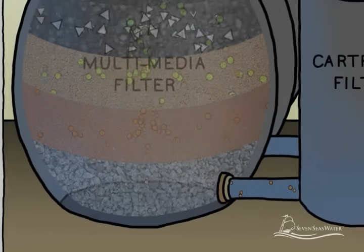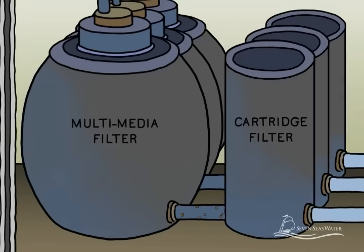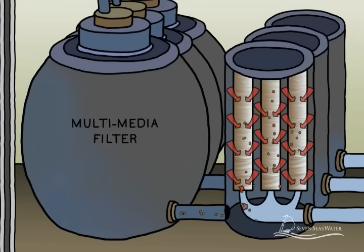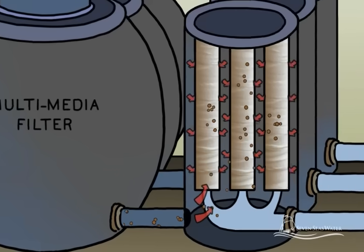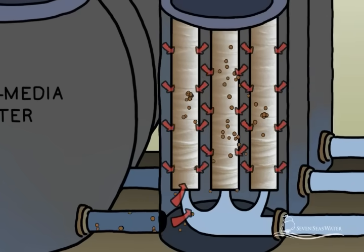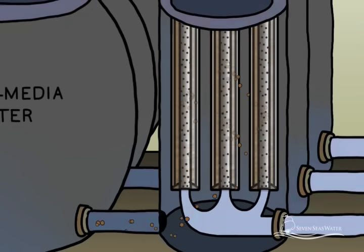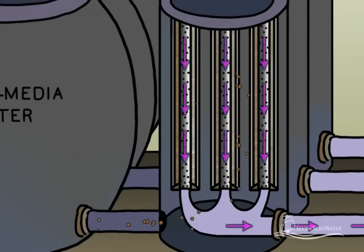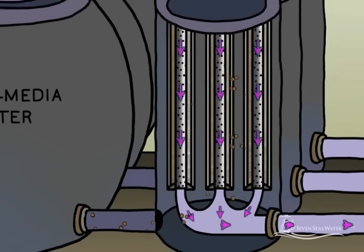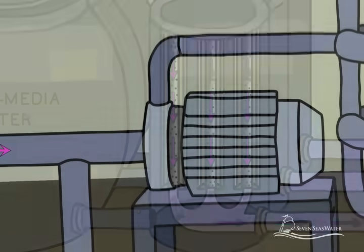Next, the filtered seawater travels to the cartridge filters, which act as a second stage of filtration. Cartridge filters used for seawater reverse osmosis are typically made from a yarn-like synthetic material that is wound into cartridges. These remove even smaller solid particles from the seawater, such as fine sand and clay, before the seawater proceeds to the reverse osmosis membranes.